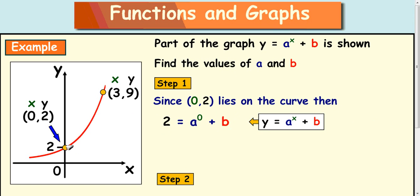The reason to use this coordinate is because we always know what something to the power of 0 is. It's always 1. So you can always work out what this value at the end is. In this case, it's going to be 1 because 1 plus 1 makes 2.